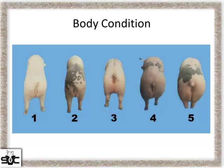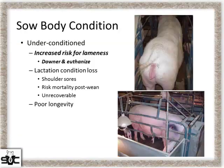Body condition — over-conditioned sows are a risk for mortality too, but the under-conditioned ones are certainly at increased risk for lameness. We talked about lameness and what that risk means for a sow dying. In general, a thin or under-conditioned sow — we need to do everything we can to bring that animal back into condition, or it is going to be a higher mortality risk for the farm.